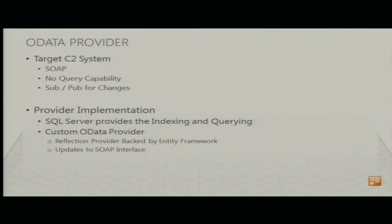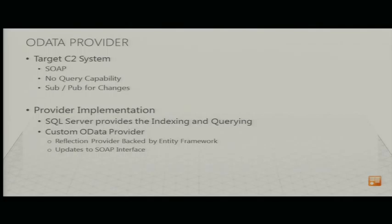The custom OData provider we had to build faced a very narrow API — it gave us a full dump of everything and then notified us of changes. Not very friendly. We chose to use SQL Server for indexing the data coming off the SOAP wire, because we needed to process expression trees. The easiest way to do that is with a LINQ provider that can process expression trees, so SQL Server was the natural choice. We take all data from SOAP, put it in SQL Server, and process our expressions there. There's a lot of work involved, but the reward is a high-performance index to run expression trees against.